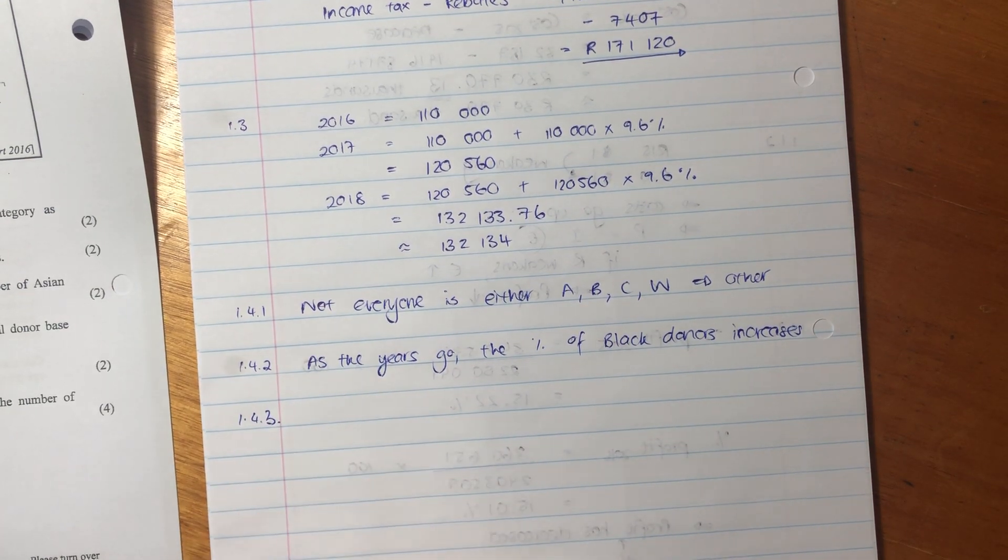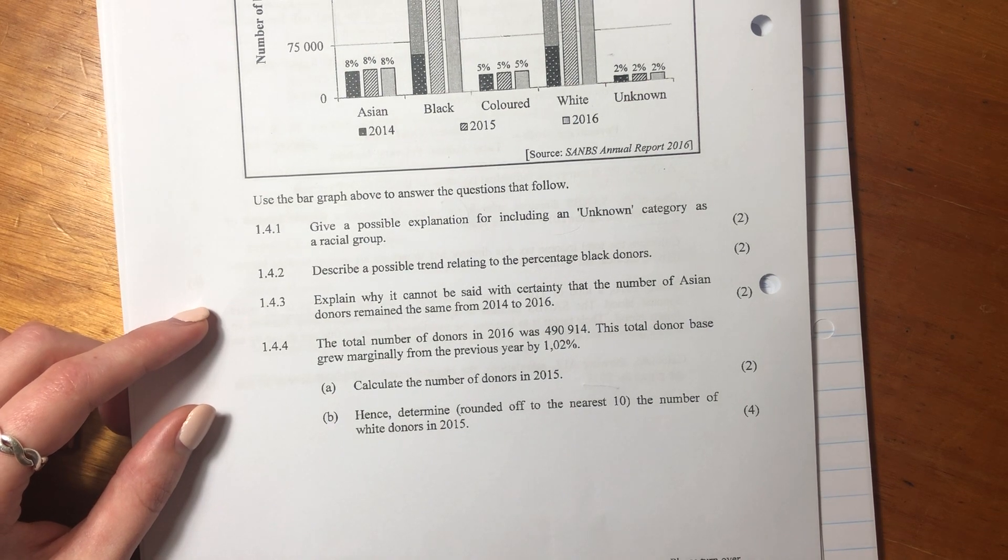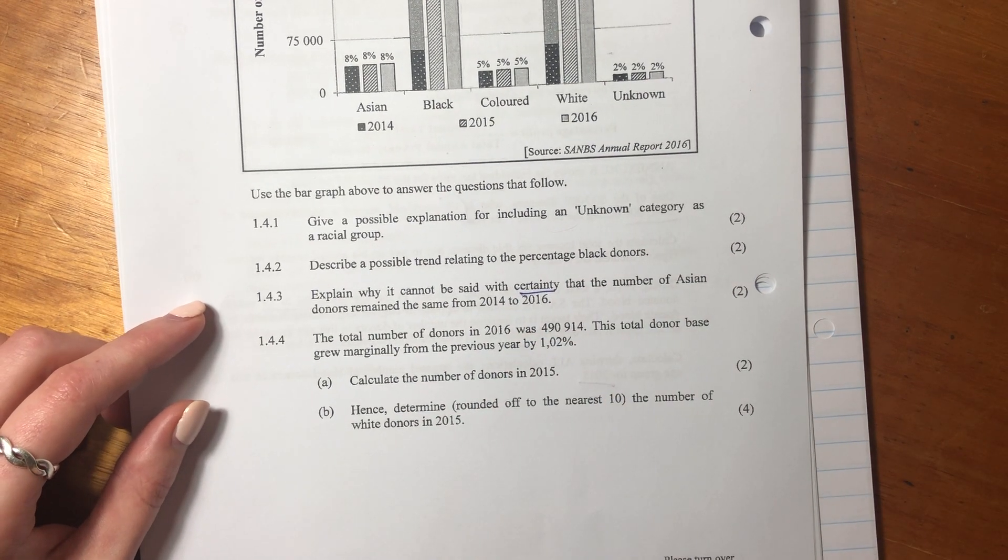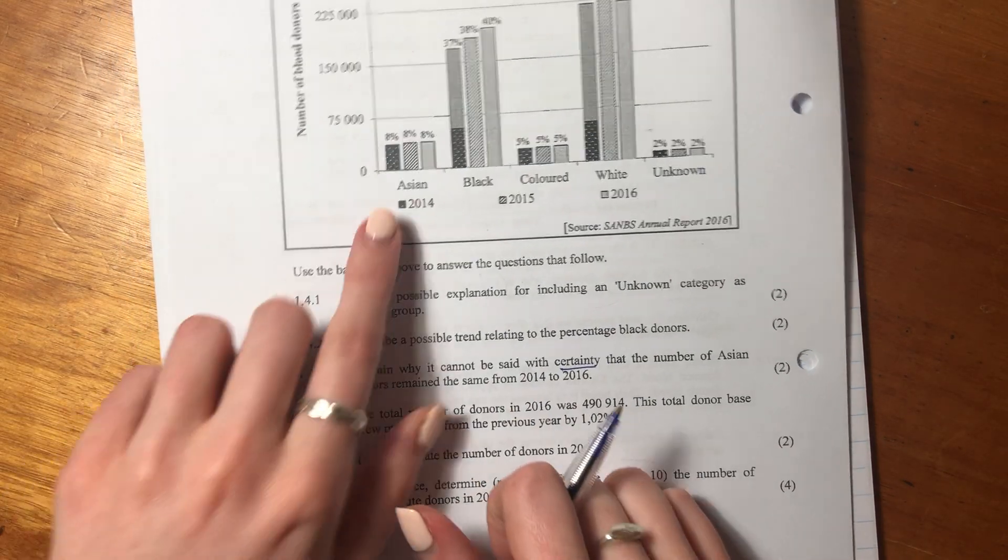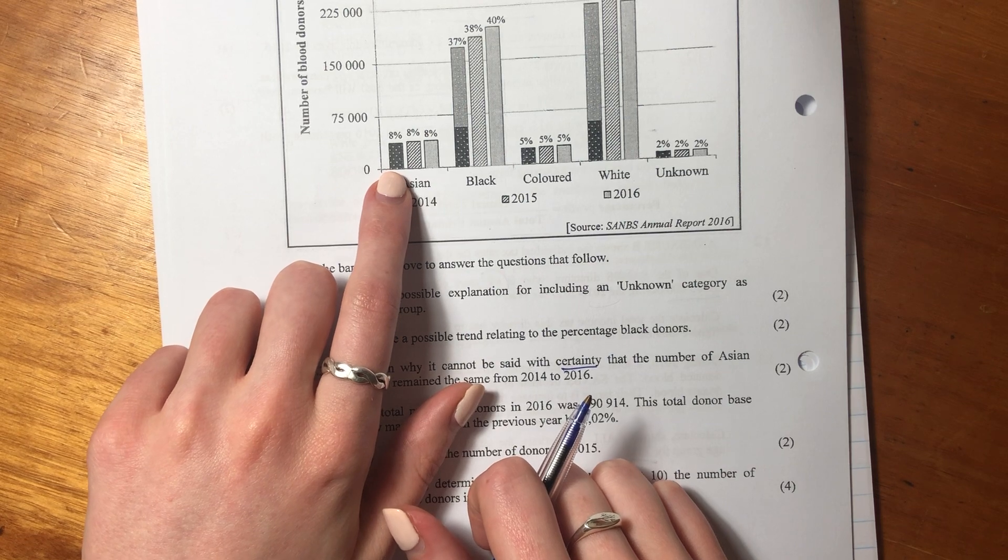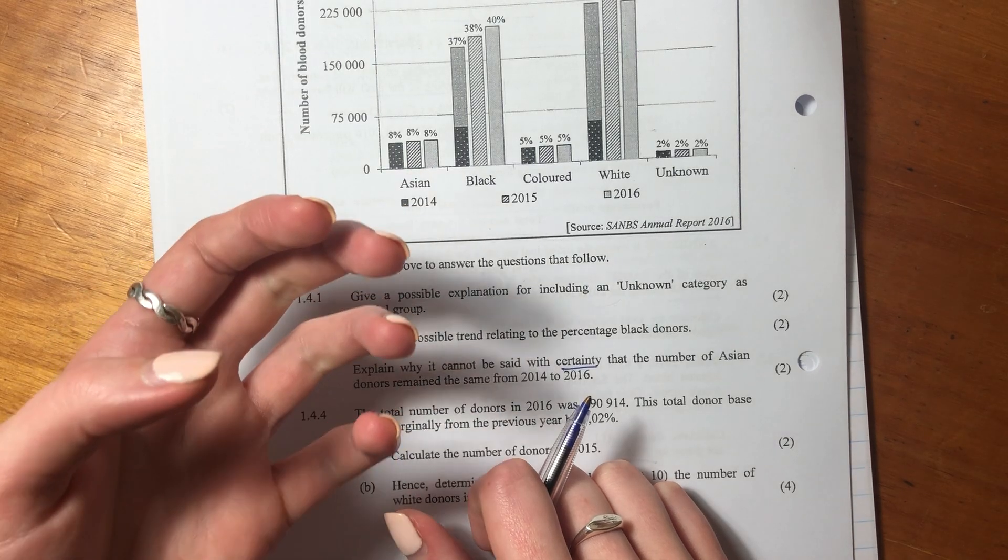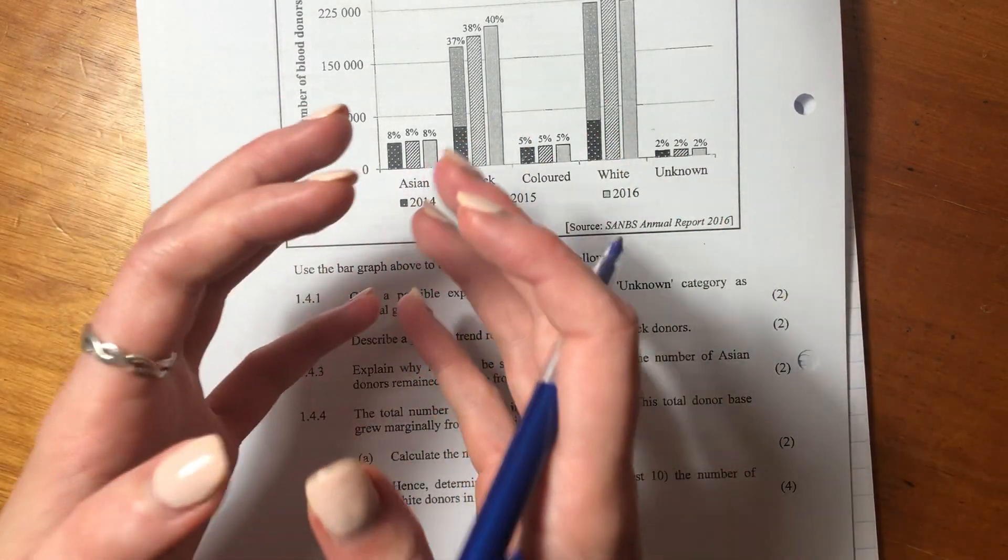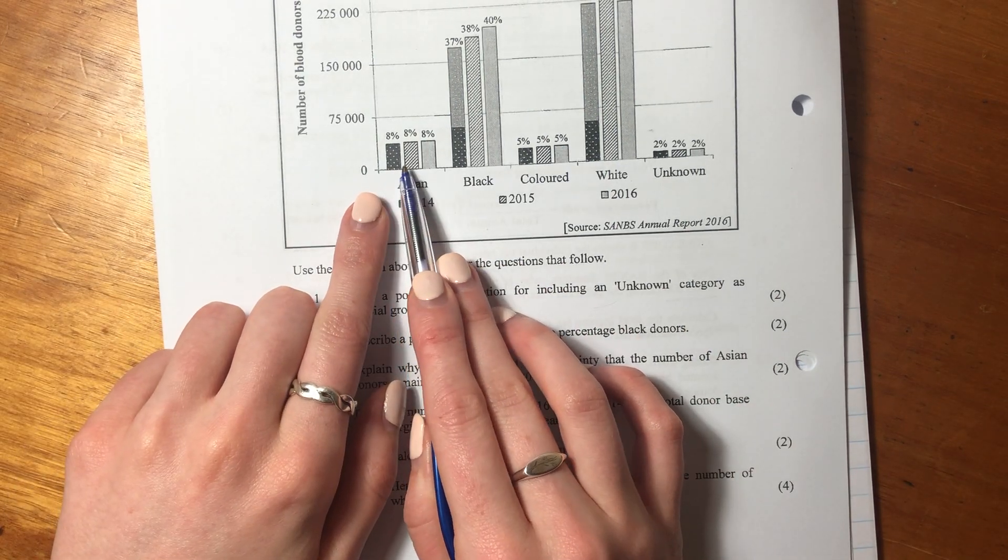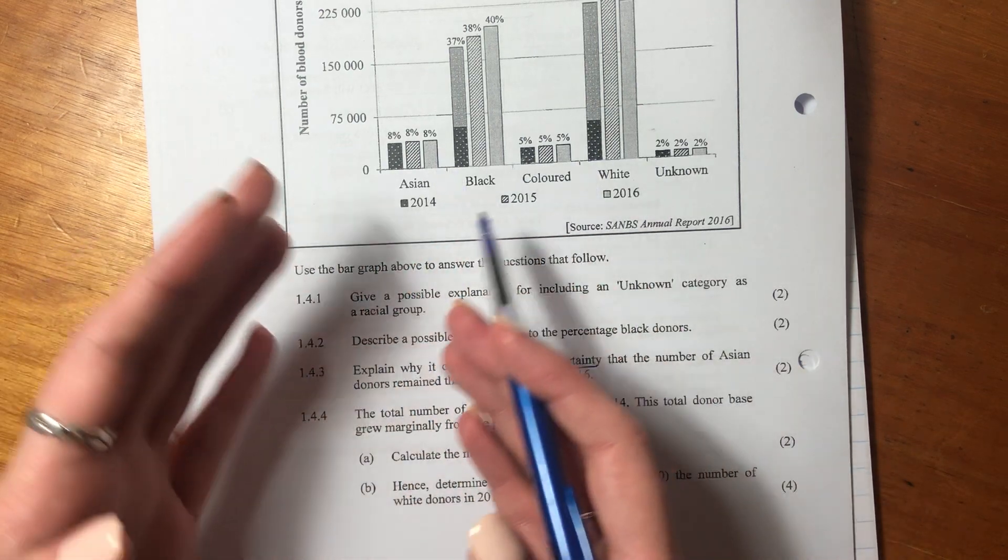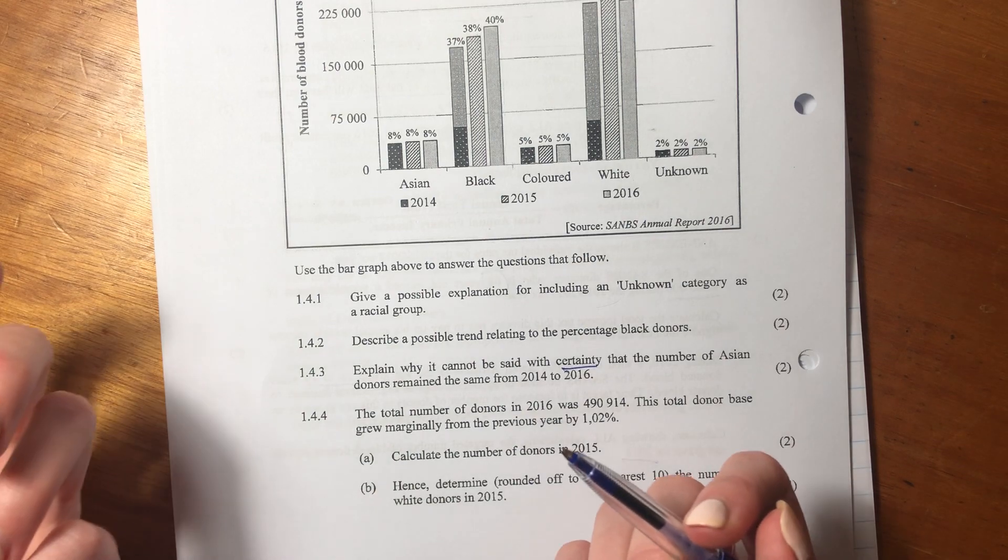Let's now go on to the next question. It says explain why it can't be said with certainty that the number of Asian donors remain the same from 2014 to 2016. So now we see here the percentage state the same, it's 8%, 8%, 8%. But remember, 8% is an indication of a whole. So it's saying if there was 100 people, 8% of them were Asian. But we don't actually know how many people donated blood in 2014, in 2015, and in 2016.